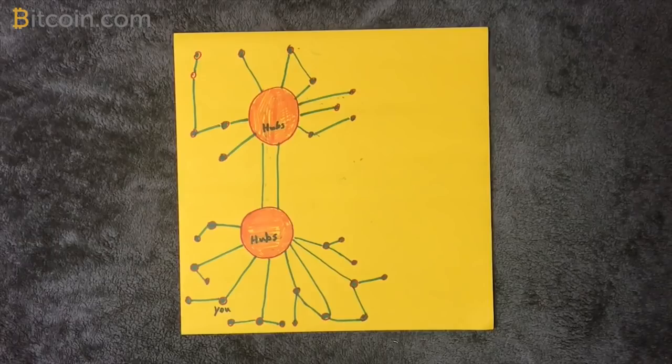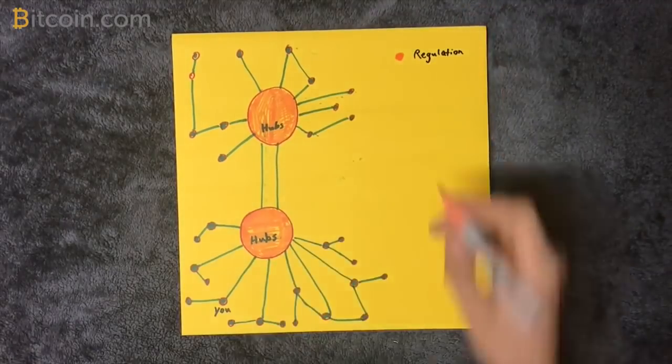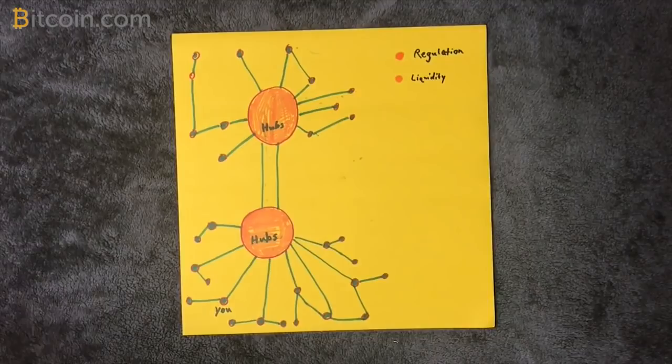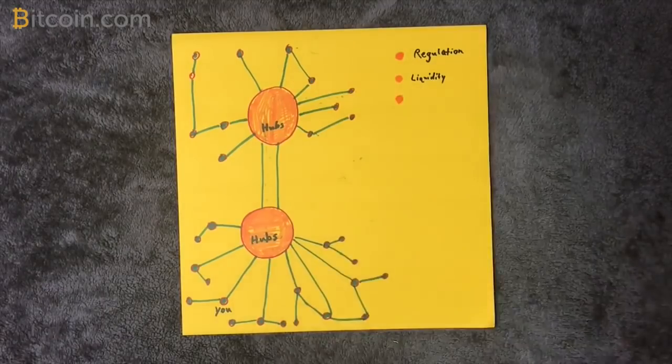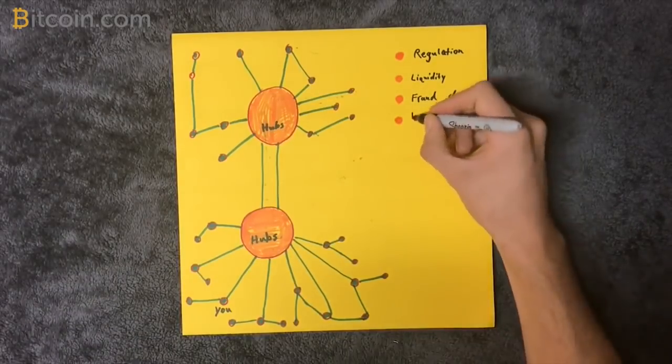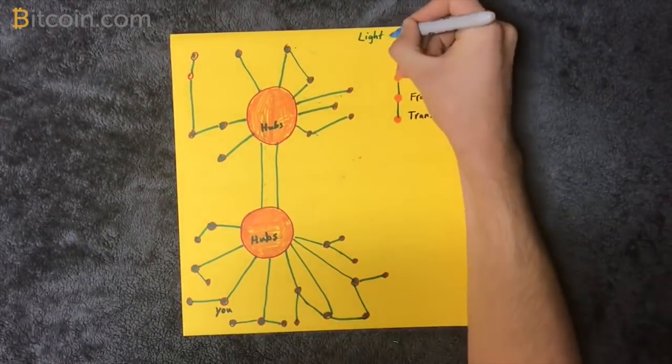So the Lightning hubs will be required to be set up for financial regulation and reporting laws, require massive amounts of liquidity to keep multiple well-funded open channels, offer fraud departments to watch the blockchain constantly and prevent theft, all while taking small fees for every transaction you route through them. Does this system sound familiar?